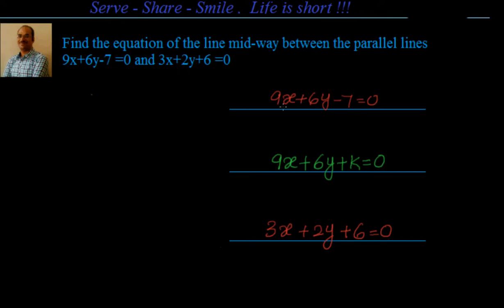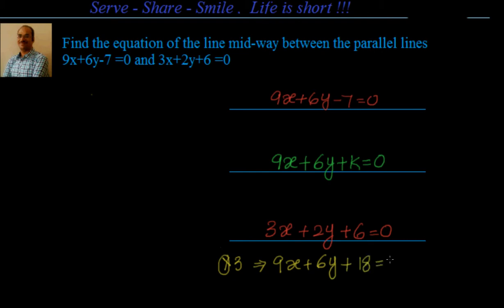Since we know that all these three lines are parallel to each other, I have taken the equation of the line as 9x plus 6y plus k equal to 0. The third line is 3x plus 2y plus 6, with the same slope and parallel to them but not with the same coefficients as the first two. So I will convert that by multiplying with 3, which gives us 9x plus 6y plus 18 equal to 0.